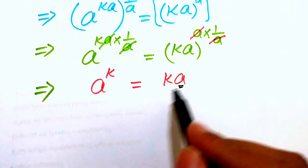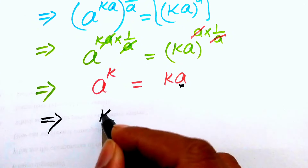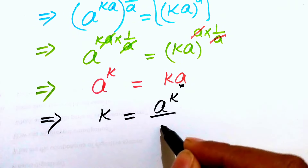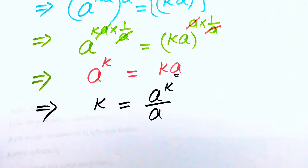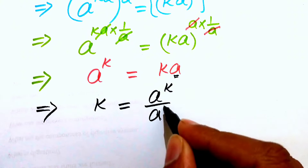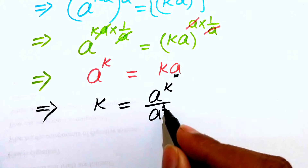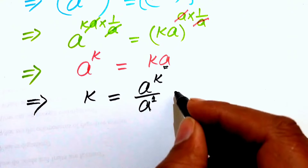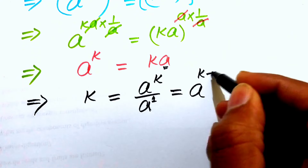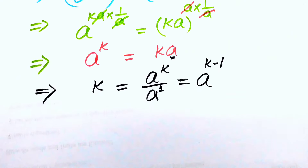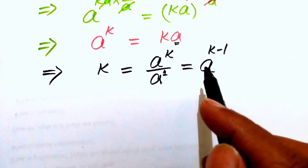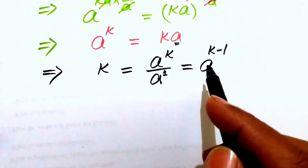We move a to the left-hand side and get k equals a to the power of k divided by a. Since the bases are the same and the denominator's exponent is one, we subtract exponents to get k equals a to the power of k minus one.